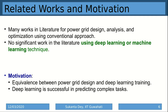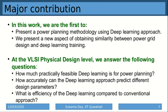It has been proved that deep learning is successful in predicting complex structures. We use deep learning for this power grid design and analysis problem because we have found an equivalence between the power grid design and the deep learning training problem. Our major contribution is that we are the first to present a power planning methodology using the deep learning approach, and we present a new aspect of similarity between power grid design and deep learning in the VLSI physical design cycle.